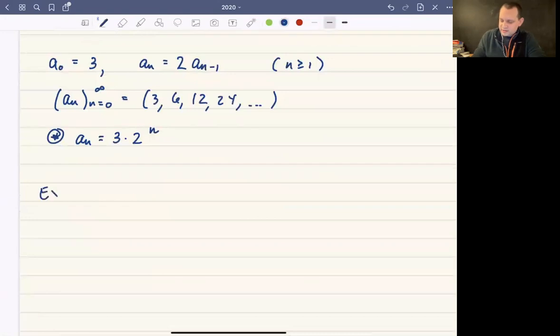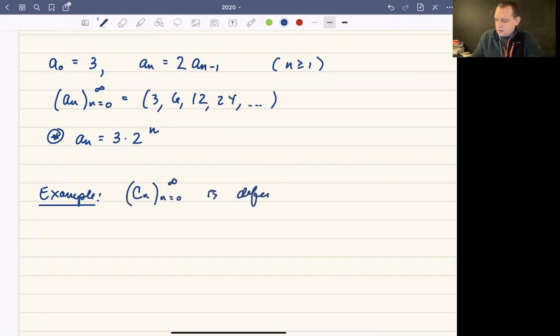And so just again, as another example, let's find the first handful of non-zero terms. Let's say that we have a sequence C_n, where C_n is defined as, say, C_0 is 1, C_1 is 4, and then C_n is going to be the n minus first term, so the previous term minus the term before that. And this is how the sequence is defined for n greater than or equal to 2.